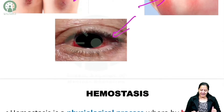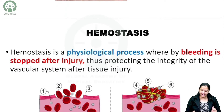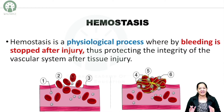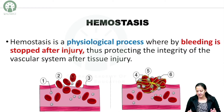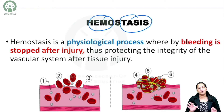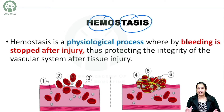Before understanding the classification of bleeding disorders, it's important to understand the steps in hemostasis. Then only we can understand the various types of bleeding disorders. What is hemostasis? As the name indicates, hemo means bleeding and stasis means stoppage — so it is the stoppage of bleeding after injury.